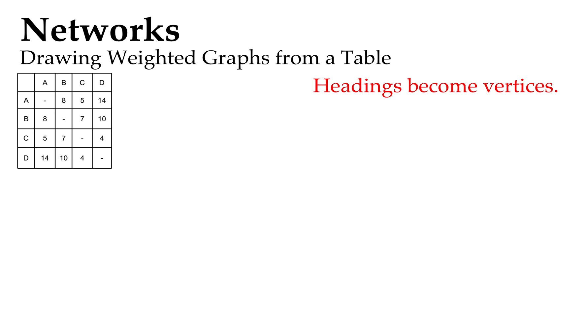So our headings are going to become our vertices. So we're going to have vertices A, B, C and D. And we're going to try and arrange them so that they're the right distances apart. But it does get tricky. I think I'd rather go from a weighted graph back to a table. But anyway, we'll be brave here.